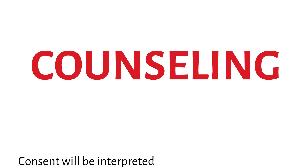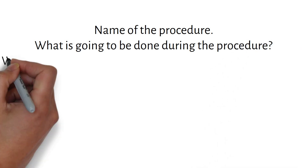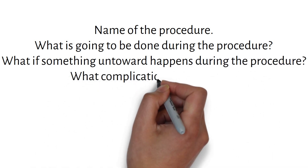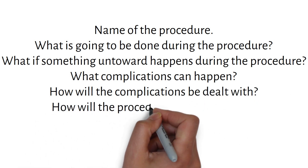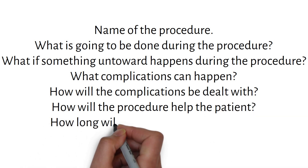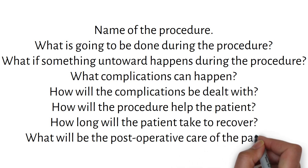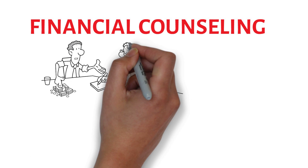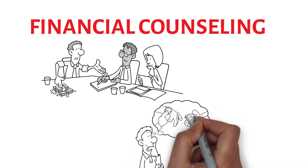In the counselling process, the doctor performing the procedure must ensure that the patient and a close family member are counselled. Counselling includes informing them of the name of the procedure, what will be done, what could happen if something untoward occurs, what complications can arise and how they will be managed, how the procedure will help the patient, how long recovery will take, and what the post-operative care will involve. The patient and family may also want information about the cost of the procedure and hospitalisation, and for this they should be referred to the concerned person or department.